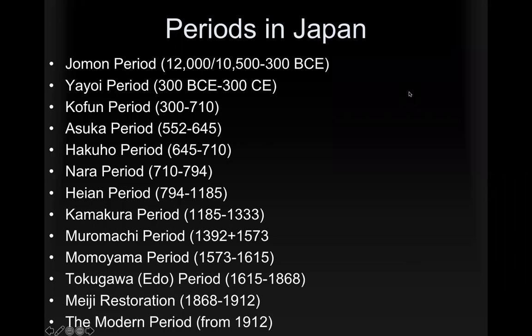This looks like a lot of material, but it's not as much as it looks like. Not all of these periods will be included in image identification on tests, since not all are easy to ask questions about. The first period we'll look at after this lecture is the Jomon period — and it is not a misprint — 12,000 to 10,500 BCE, meaning we're talking about up to 14,000 years ago until 300 BCE. Then we'll look at the Yayoi period, the Kofun, and the Osaka period, and if time permits the Hakuho and Nara period.